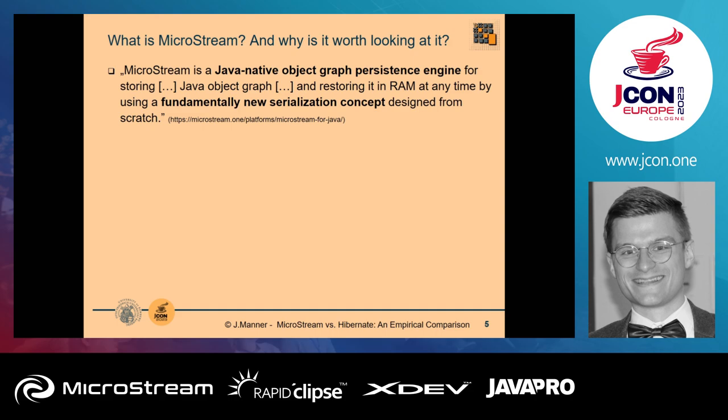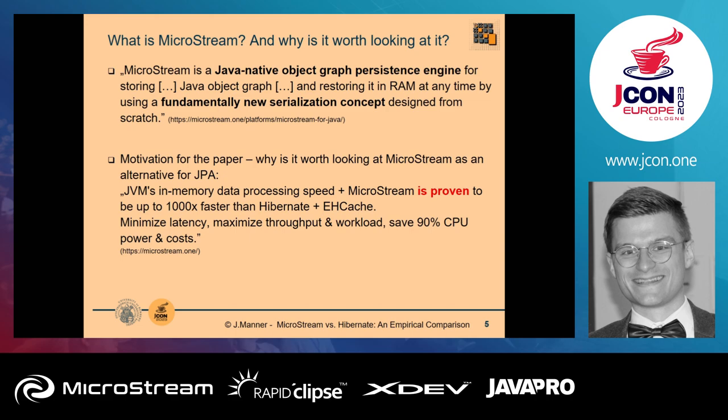At their web page, MicroStream describes itself as a Java-native object graph persistence engine implementing a fundamentally new serialization concept. You can directly store the Java object graph from RAM to disk without any mapping layer. The motivation for the paper was their marketing claim of being proven to be a thousand times or even faster than a comparable setting with Hibernate and EHCache. We wanted to check if this was really the case or just a marketing claim, and under which circumstances it holds. We also looked at machine utilization, which was quite interesting.